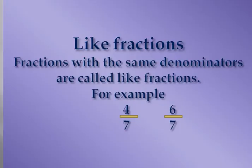What are like fractions? For like fractions, we need two or more than two fractions, because we have to compare the denominators. Fractions with the same denominators are called like fractions. For example, 4 by 7 and 6 by 7. In both fractions, you can see the denominator, which is 7, is the same.